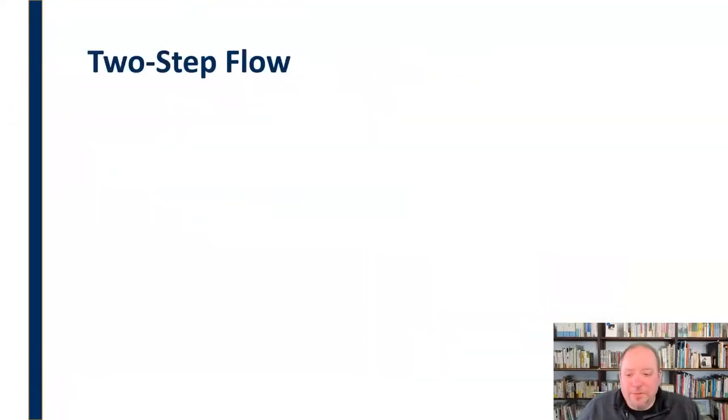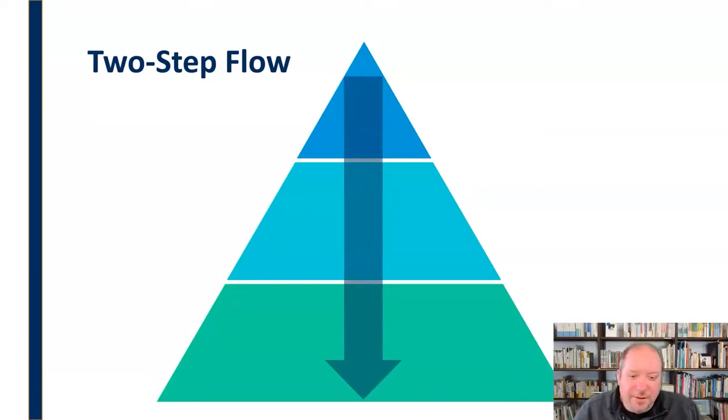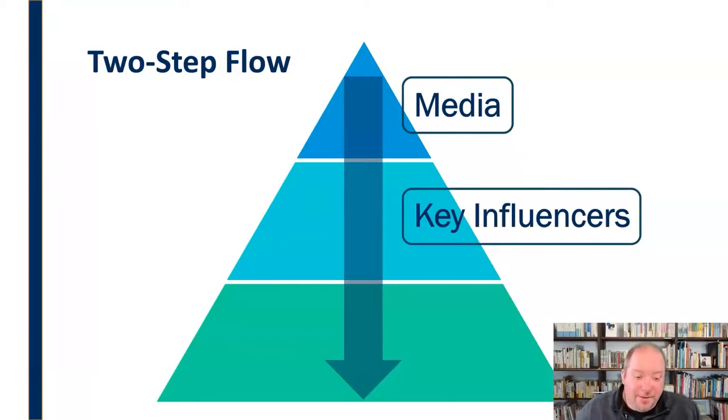The next area we'd like to look at is called Two-Step Flow, brought to us by Lazarsfeld and Katz. Two-Step Flow has to do with how information is not only communicated, but the steps that it goes through and how we receive this information and how it's spread. According to this theory, if we think of this like a pyramid or funnel, it's upside down, more like a megaphone coming from the top down. The information is flowing from that top down.